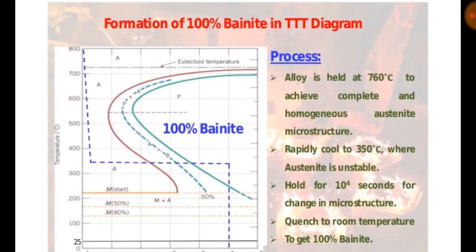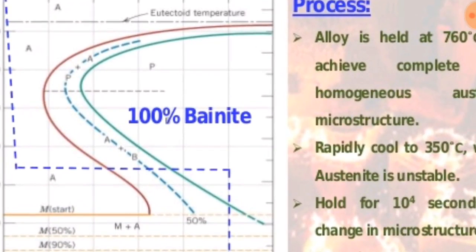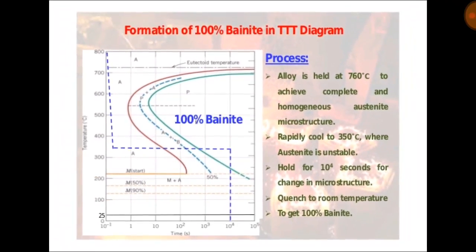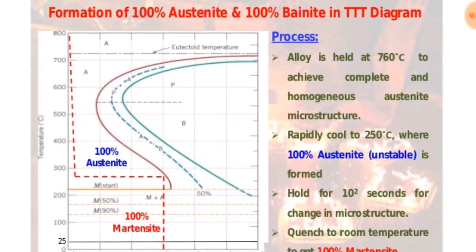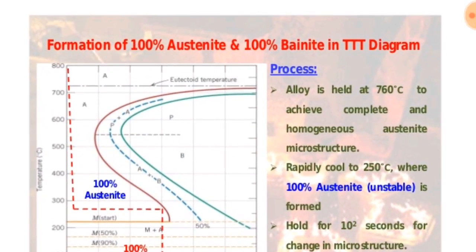If we follow this procedure, we obtain 100% bainite. Formation of 100% austenite and 100% martensite in the TTT diagram.